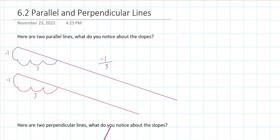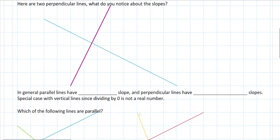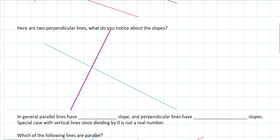Checking the red line again: 1, 2, 3 — looking good. So the slope of the red line is also negative 1 over 3. For parallel lines, the slopes are the same. Now let's look at two perpendicular lines and see what you notice about their slopes.